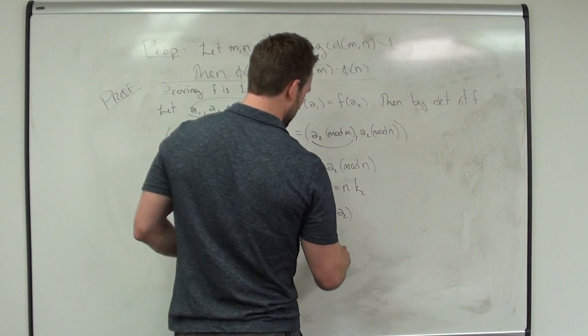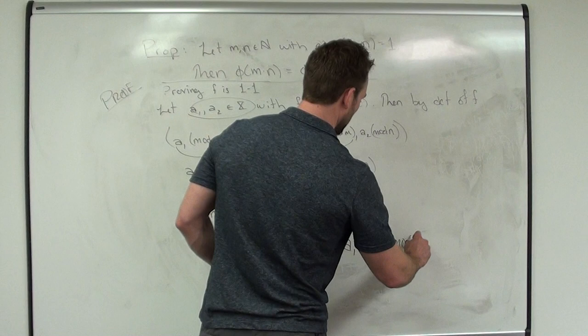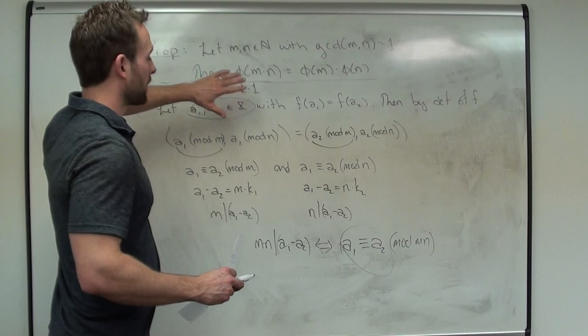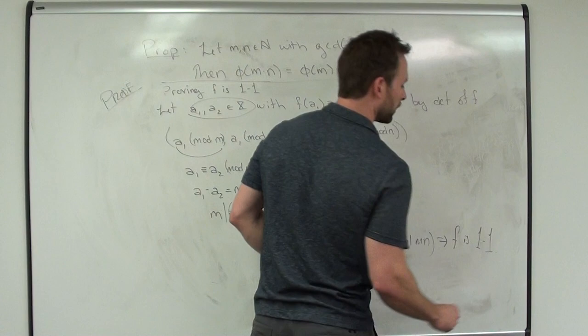Remember, we want to show a1 = a2. In our X world — that mod mn setting — mn dividing a1−a2 just means a1 ≡ a2 mod mn, which is the same thing. Travel back and forth between those; this is an if and only if. So a1 is congruent to a2 — meaning they're the same element, so f is 1-to-1.